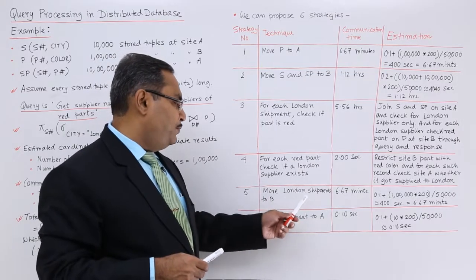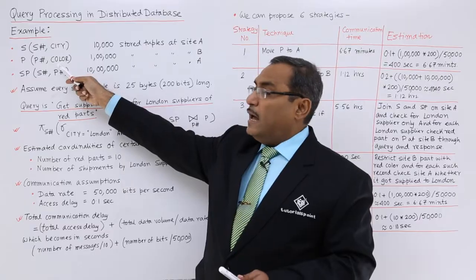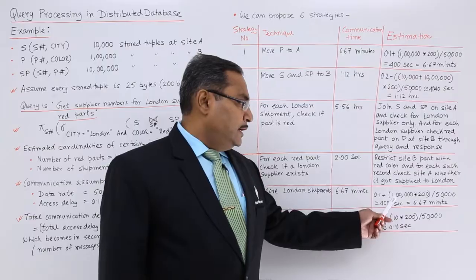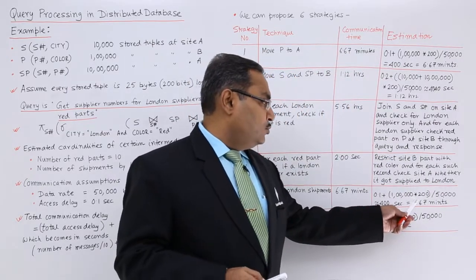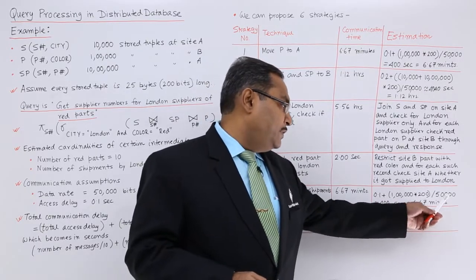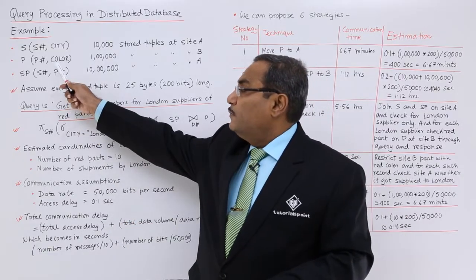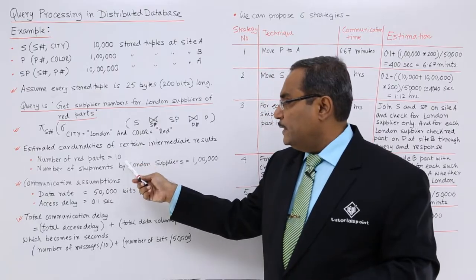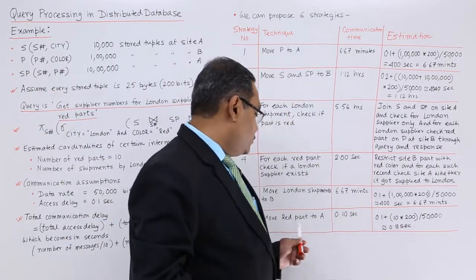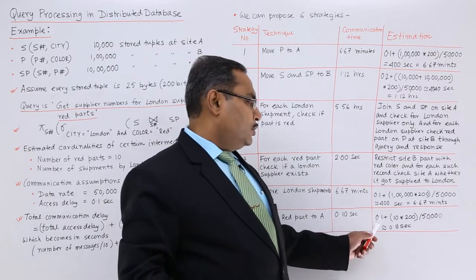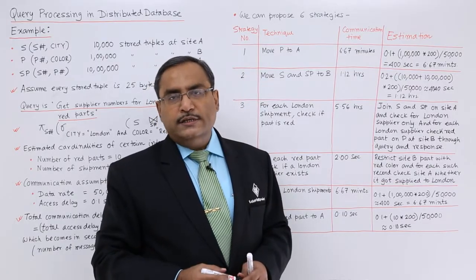Strategy 5: Move London shipments to site B. Only the London shipments (1,00,000 tuples) are moved to B, where the parts with color information reside. The estimated time is 1,00,000 × 200 / 50,000 = 400 seconds ≈ 6.67 minutes. Strategy 6: Move red parts to site A. Since the parts table has 1,00,000 tuples but only 10 tuples have color = red, it is much better to move only the red parts to site A. The estimated time is 0.1 + (10 × 200 / 50,000) ≈ 0.10 seconds.